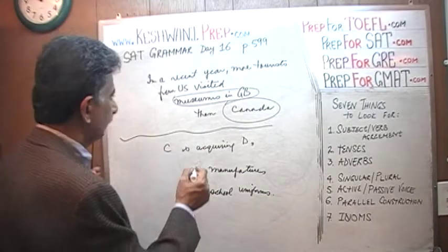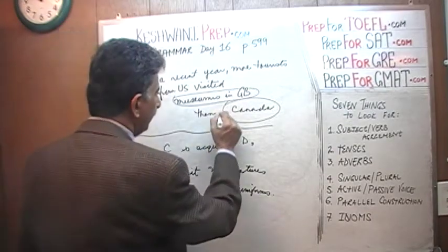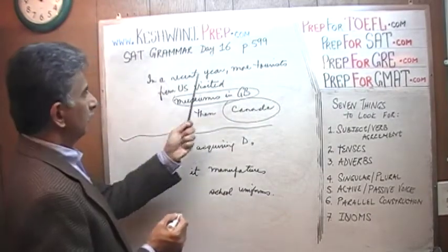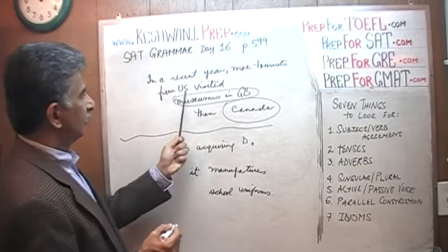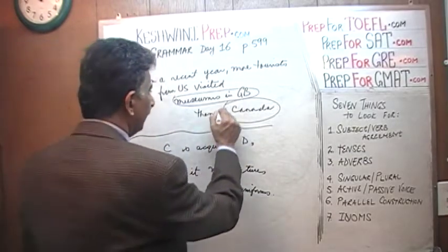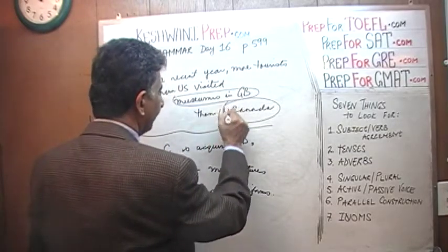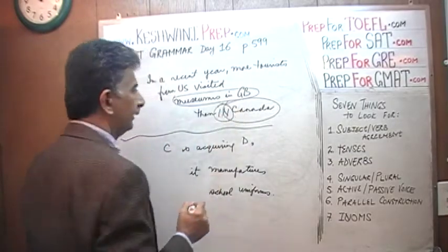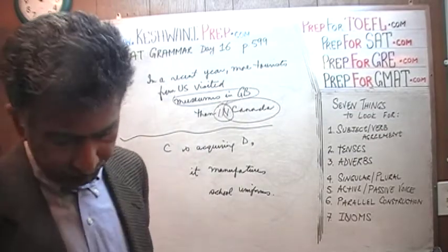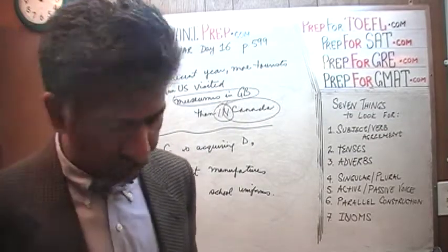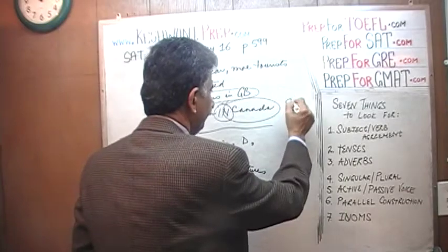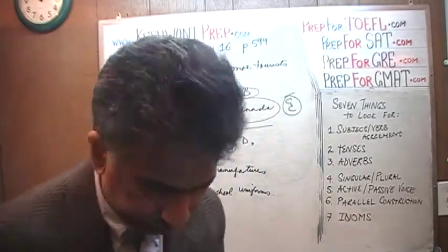So all we have to do here is insert the word 'in.' More tourists from the US visited museums in Great Britain than in Canada. That's it — just insert the word 'in' and we are done. And that's answer choice E.